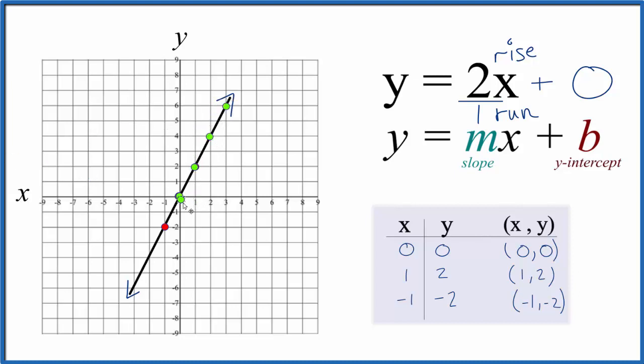Likewise, we could go down 2 and over 1 in the opposite direction. Down 2 over 1 in the opposite direction. And all those points, they're on our line as well.